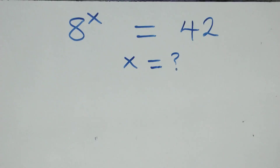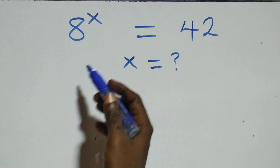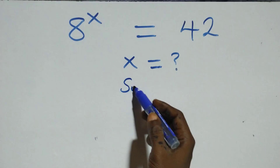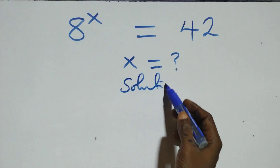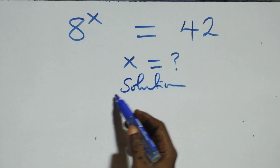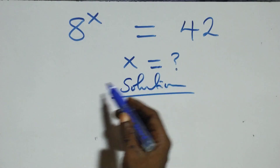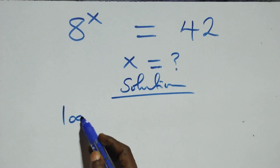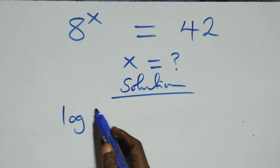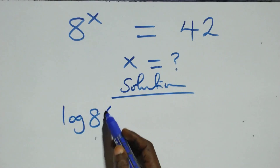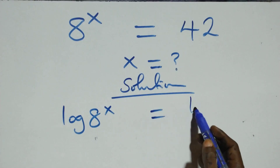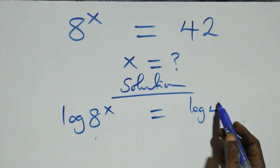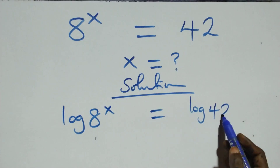Hello, you are welcome. We are going to solve this exponential equation. We take the log on both sides: log(8^x) equals log(42).